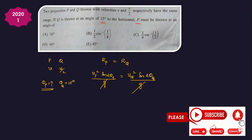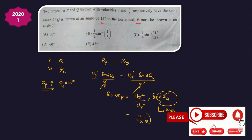We need to find the angle of P. So sin2θP = (uq² / up²) × sin2θq. Theta q is given as 15 degrees, so 2θq = 30. Now uq = v/2 and up = v. So (v/2)² / v² = (1/4). sin30 = 1/2. Therefore sin2θP = (1/4) × (1/2) = 1/8.